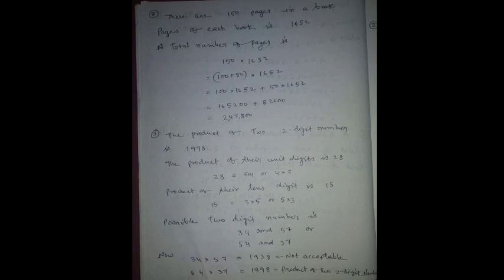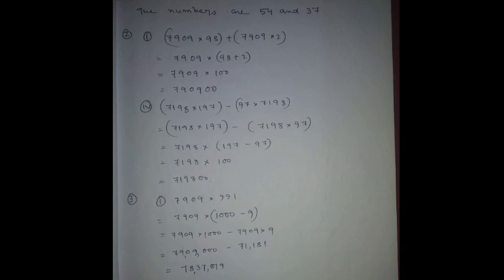Product of tens digits is 15, which is possible as 3 into 5 or 5 into 3. Possible numbers are 34 and 57, or 54 and 37. Now 34 into 57 gives 1938, which is not possible. But if we take 54 and 37, we get 1998. So the numbers are 54 and 37.